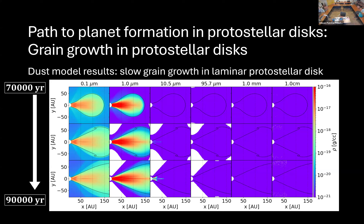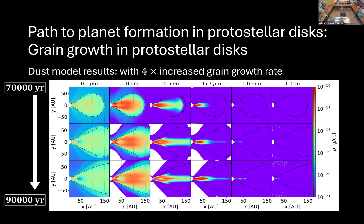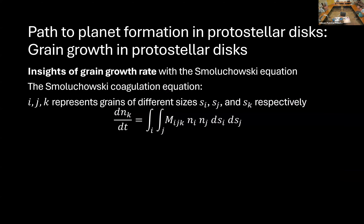If we increase the grain growth rate by a factor of four, we can actually get some large dust grains — some millimeter-size grains form pretty fast, and in the later evolution we can even get some centimeter-size grains. So why is grain growth slow in this laminar protostellar disk? And why is a factor of four increase sufficient to produce large grains? To answer this, we go back to the Smoluchowski coagulation equation governing grain growth.